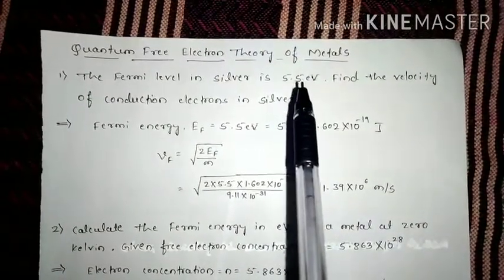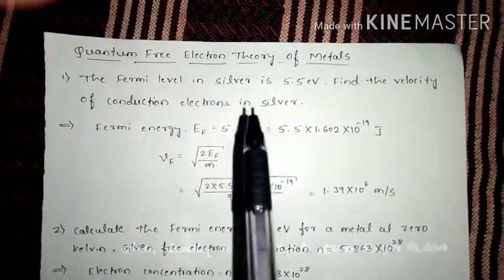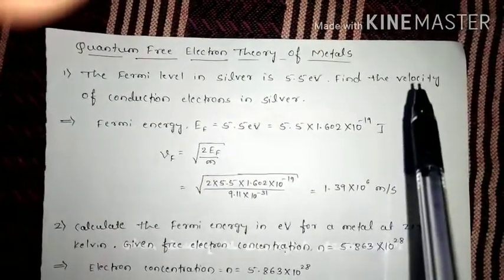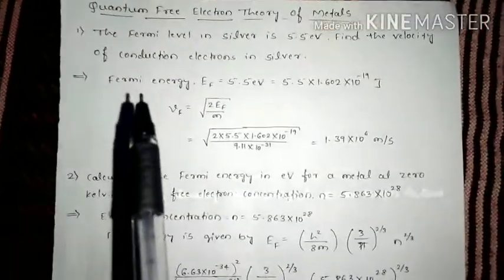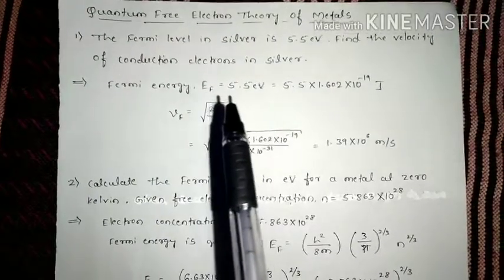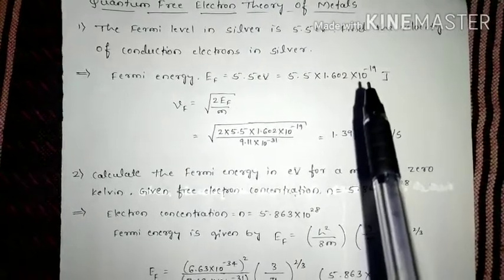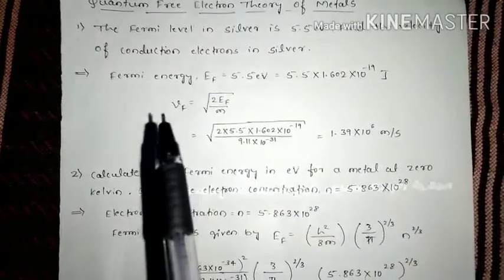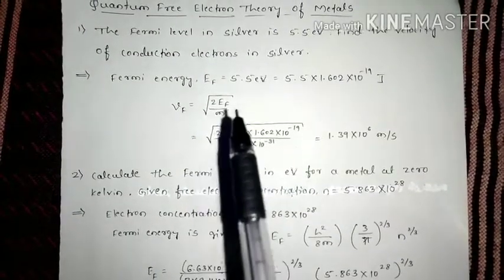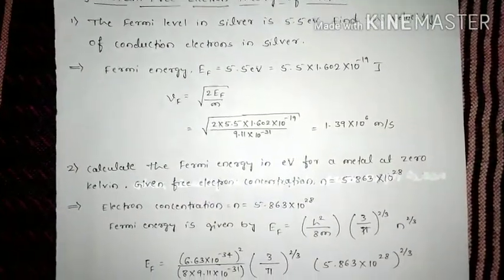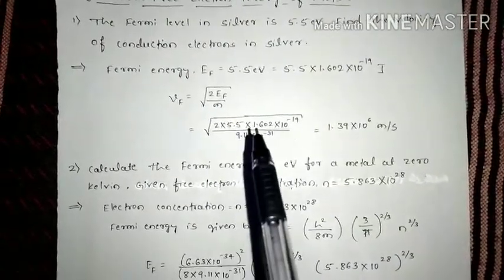He has asked us to find the Fermi velocity. Here, Fermi energy EF is given as 5.5 eV, which we need to convert into joules. We have the formula: VF = √(2·EF / m), where we substitute the given EF value.